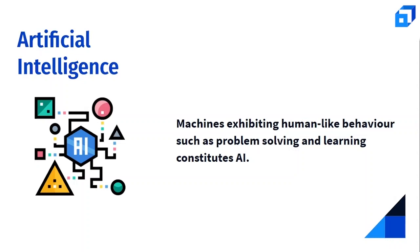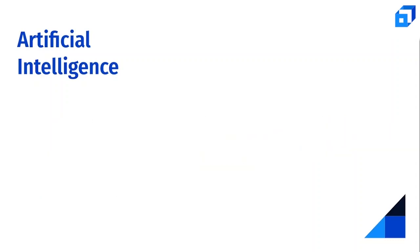AI is the science of simulating human behavior in machines that are programmed to perform tasks like humans and mimic their actions. Any machine that exhibits human-like traits such as problem solving and learning constitutes AI. For example, a Tesla driving by itself from one place to another without human intervention is possible due to AI.